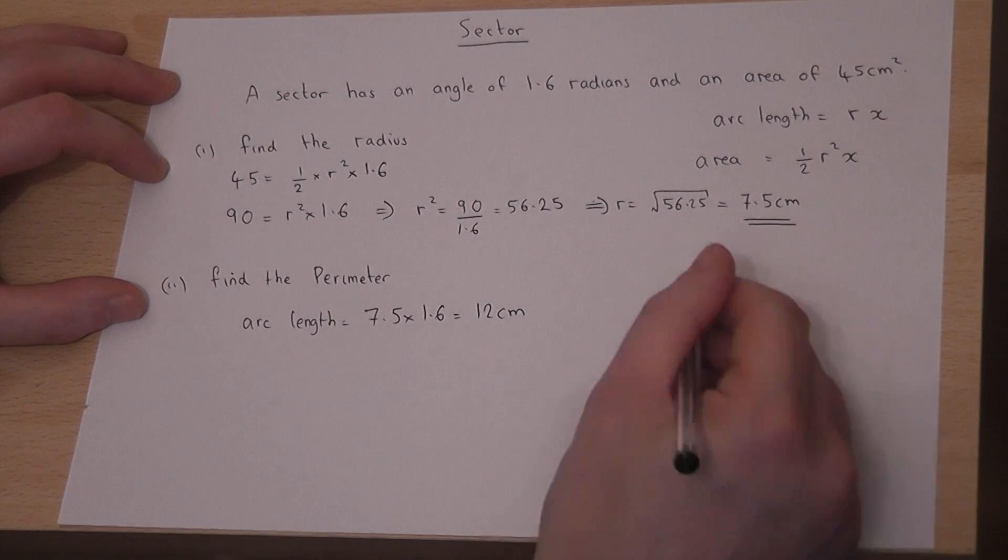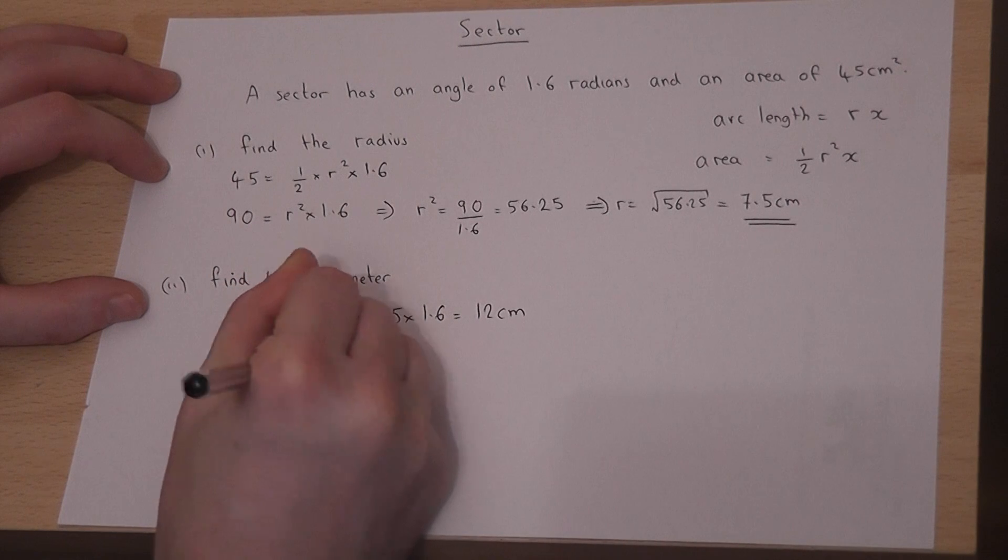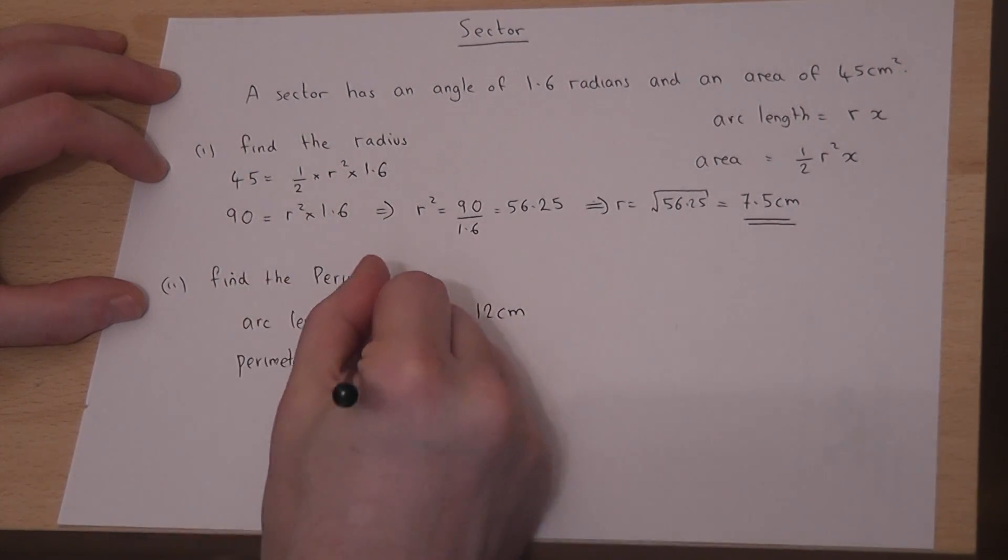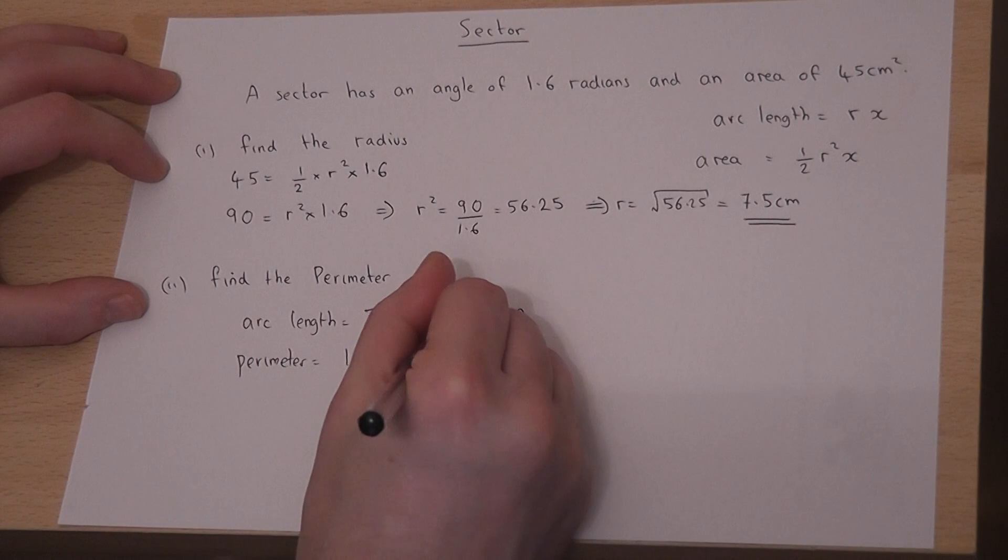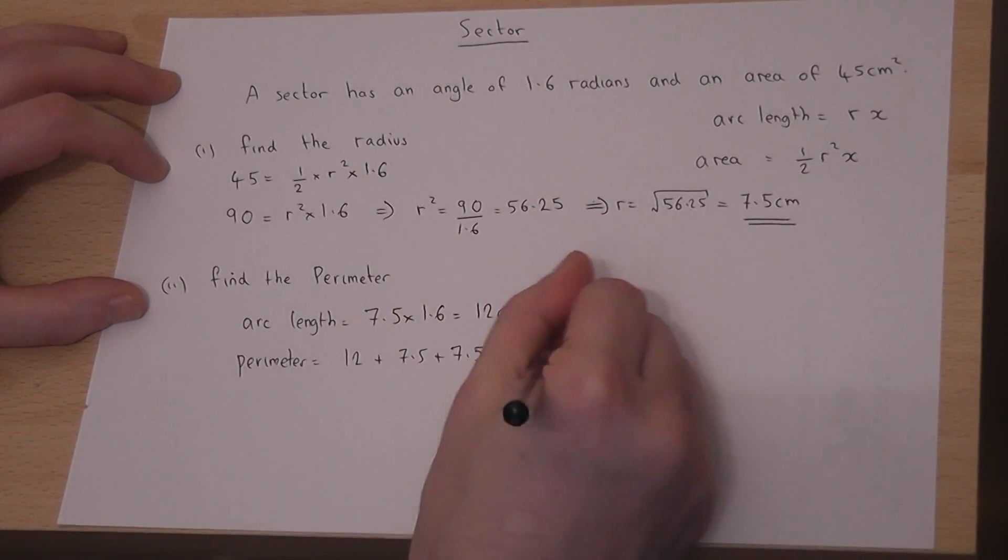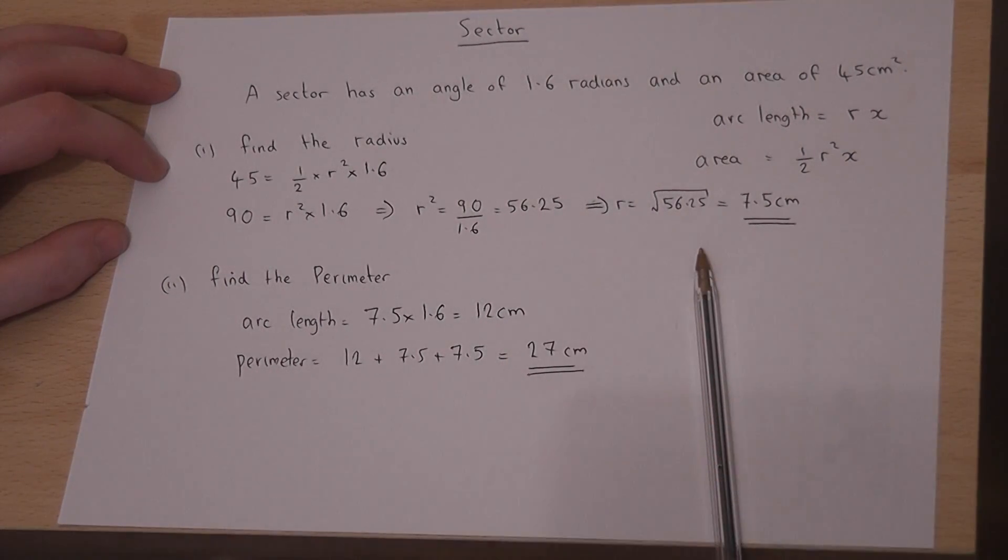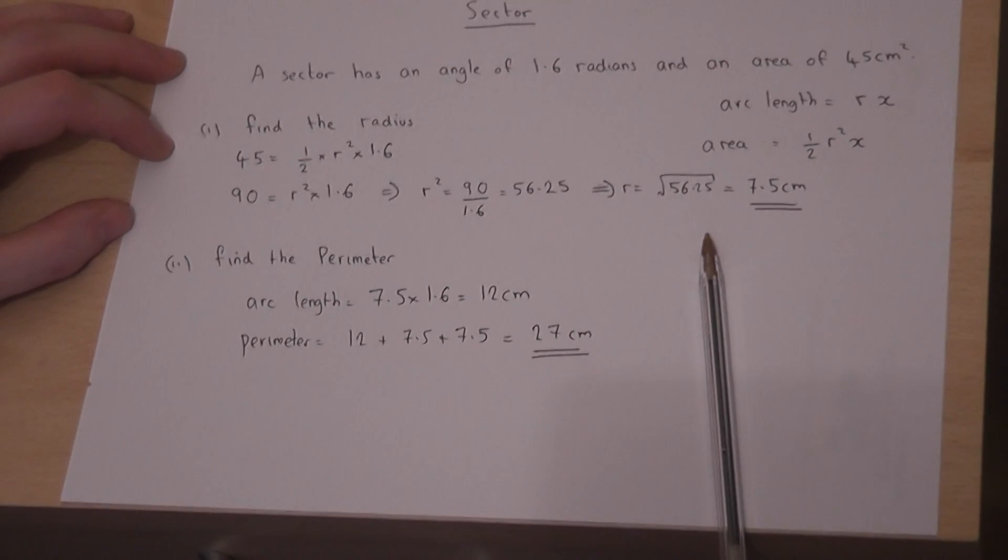The perimeter is the arc plus the two radii. So the perimeter equals 12 plus one radius plus another radius, which equals 27 centimeters.